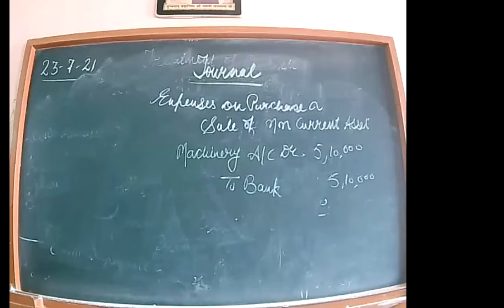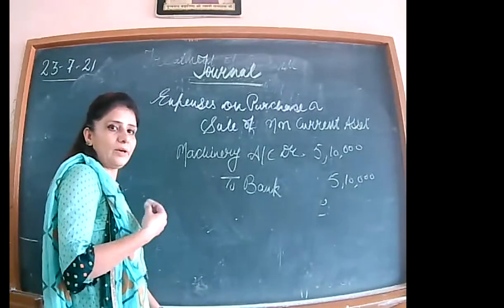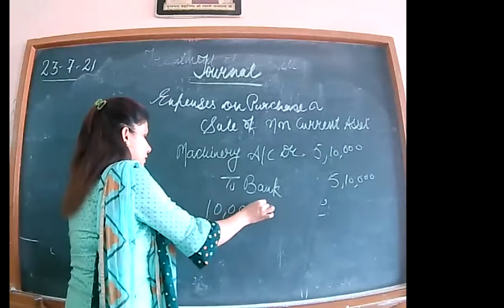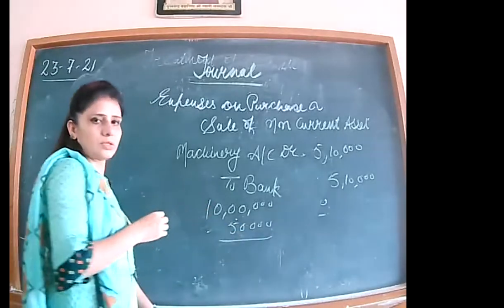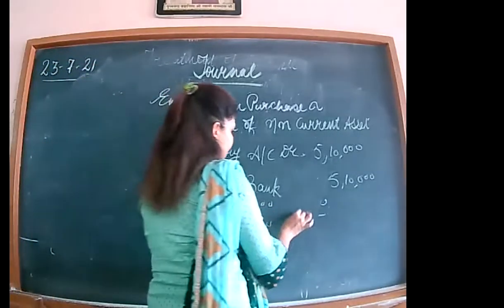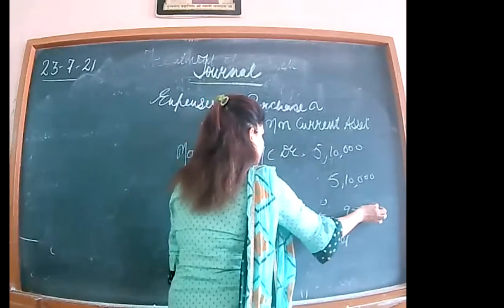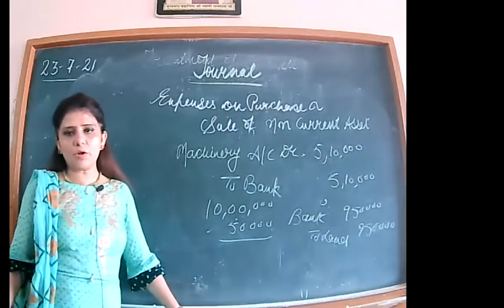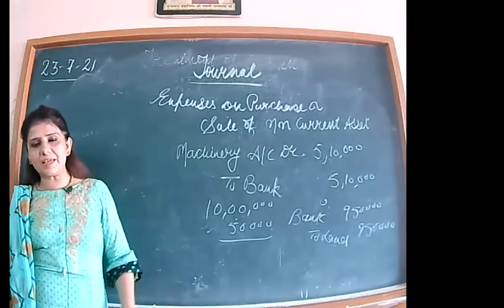This we will see with the help of an example. If you have sold assets, for example, the selling price of the asset — if you want to sell an old asset, you have to minus the expenses. If you want to buy a new asset, expenses will be added to the cost of the asset.